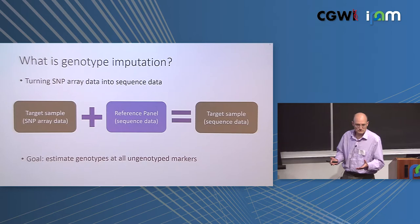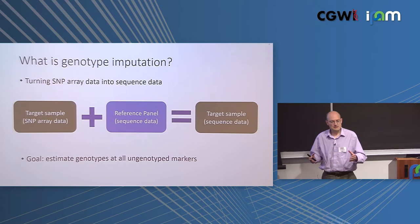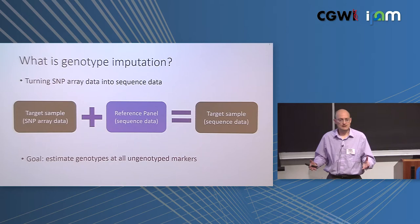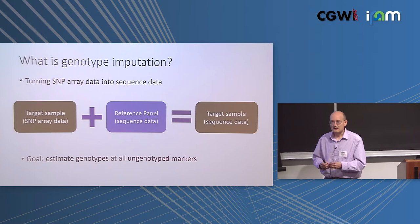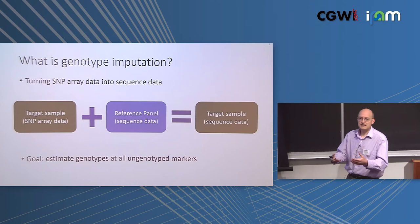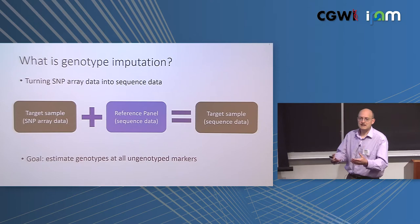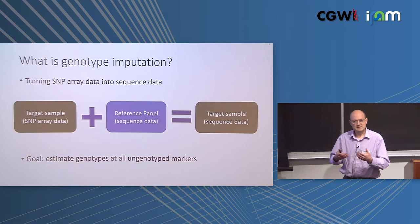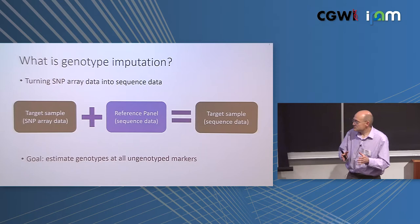Another use of the term genotype imputation is for what's sometimes called genotype refinement — when you actually do have data, it's just noisy. You might have low coverage sequence data, or poor quality DNA going into a SNP array with noisy signal intensities. In that case, people use imputation-like models to estimate genotypes. That's not what we're talking about here. We're interested in when you have no data, whereas the other kind is noisy data where you don't necessarily need a reference panel.